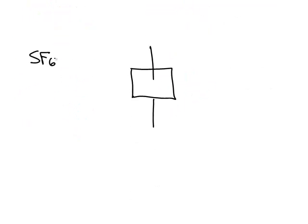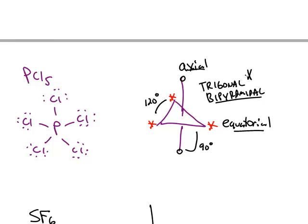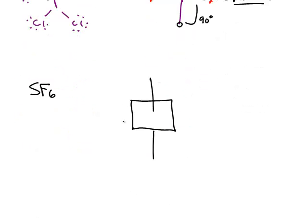The highest we're going to go is to have six terminal atoms, and it's very similar to the last shape. Instead of a triangle base, we have a square base, and then we have a pyramid to the top and to the bottom. The difference is all of these are equivalent positions. There's no difference between equatorial and axial. The only shape where you have a difference is trigonal bipyramidal.